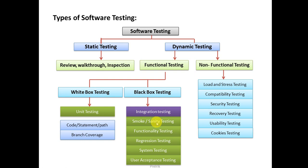Functionality testing checks that all functions required by the stakeholder have been delivered and work properly. Regression testing covers all existing functionalities when a new build arrives — for example, if a new build has requirements A, B, and C, functionality testing covers only A, B, and C, while regression testing covers all existing functionality. System testing checks your whole application. UAT — user acceptance testing — has two types: alpha testing, done in-house, and beta testing, done by individuals outside the company.